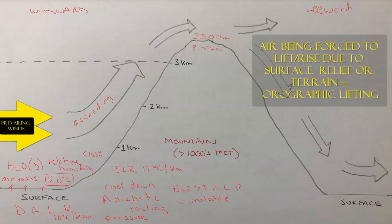Because the DALR is 10 degrees per kilometer, the temperature drops 10 degrees every time the air rises 1 kilometer. So the air starts at 20°C, drops to 10°C at 1 kilometer, and keeps rising and cooling adiabatically. It reaches 0°C at 2 kilometers — the temperature at which pure water can freeze — and continues up to 3 kilometers where it's minus 10 degrees Celsius.